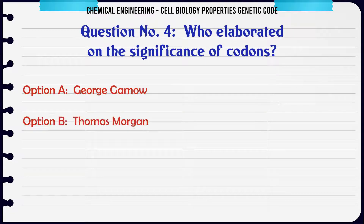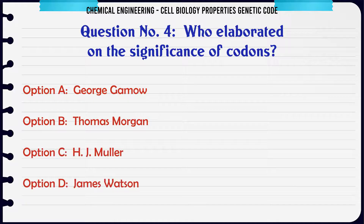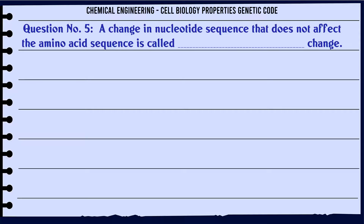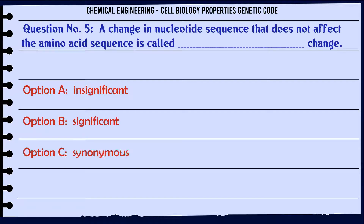Who elaborated on the significance of codons? A) George Gamow, B) Thomas Morgan, C) H.J. Muller, D) James Watson. The correct answer is George Gamow.